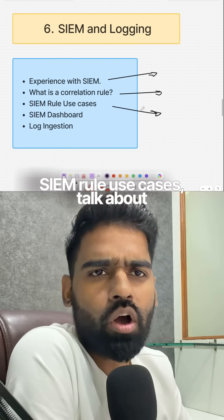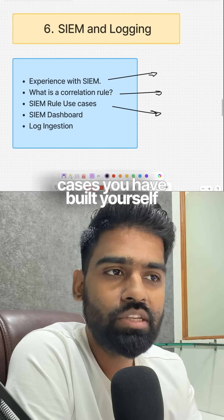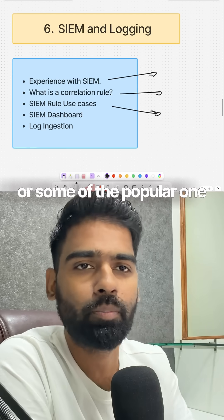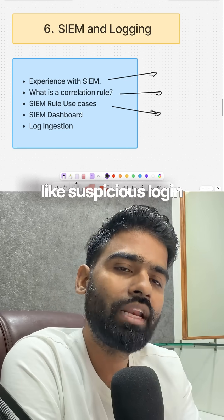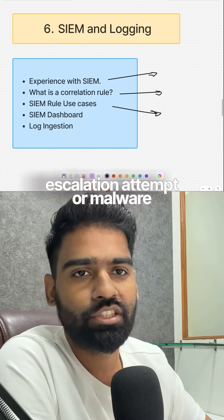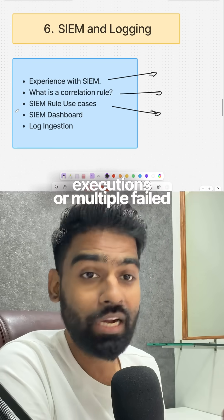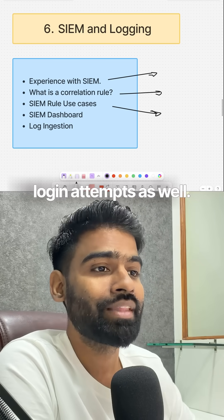For SIEM rule use cases, talk about some rule use cases you've built yourself or popular ones — like suspicious login activity, privilege escalation attempts, malware execution, or multiple failed login attempts.